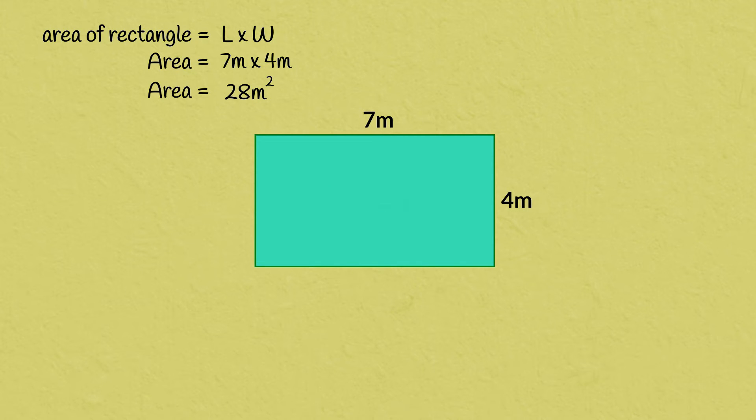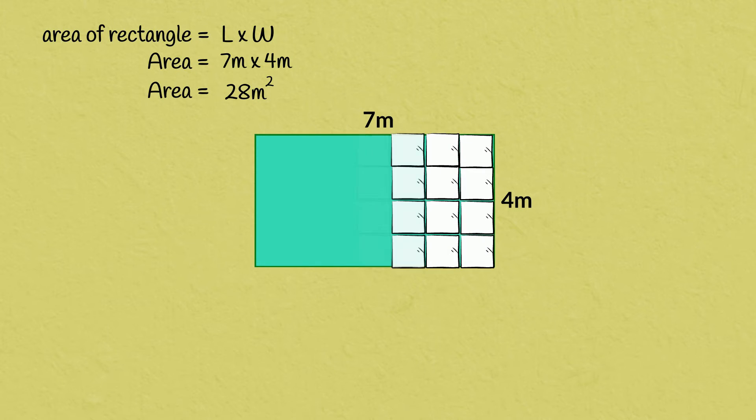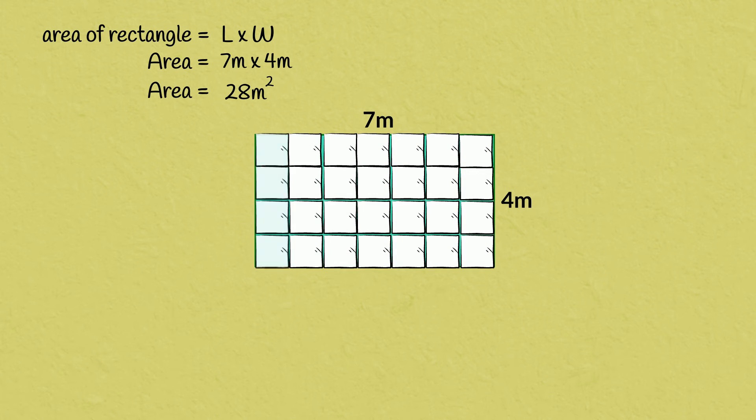We always use squares to measure area — for example, square meters, square centimeters, square kilometers, and so on.